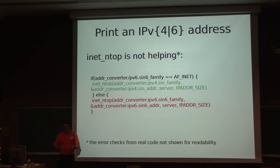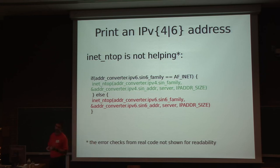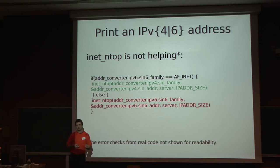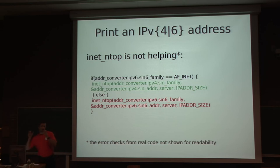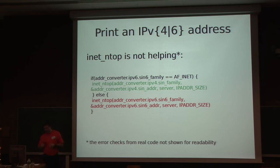A bit of a rant about dealing with two address families: inet_ntop is not really suited for printing out socket addresses because it deals with the address itself, whereas in code you mainly deal with the socket structure that has both the address and the port. So you end up with slightly spaghetti code — if family is IPv4 then do this, if family is IPv6 then do that — which is inconvenient since every program would need this kind of operation.